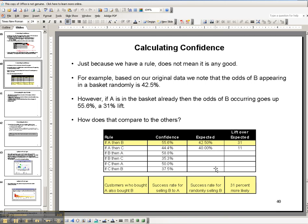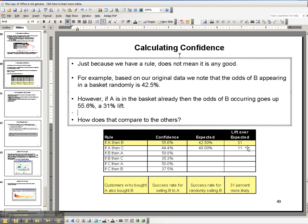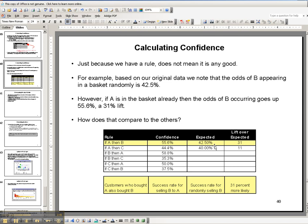And you derive that 31%, guys, just by simply taking the 55.6%, dividing it by the 42.5%. And with that, you will get a 1.31, which tells you that it's 31% more likely. So that's basically how we do that.